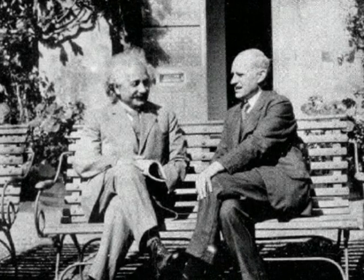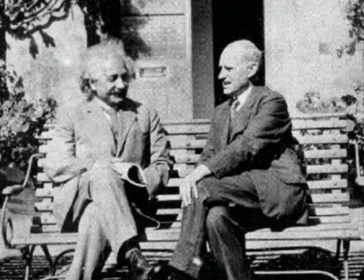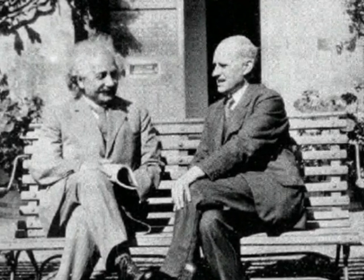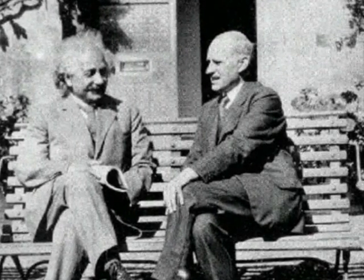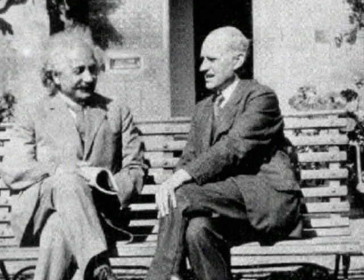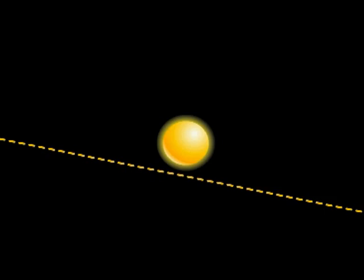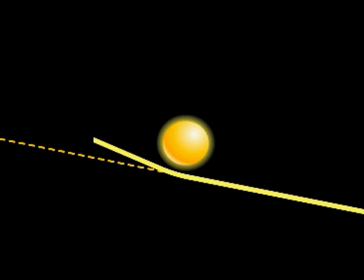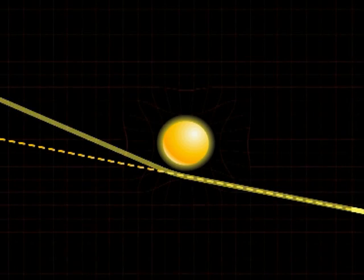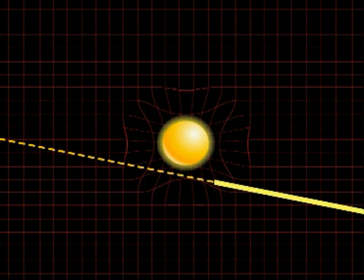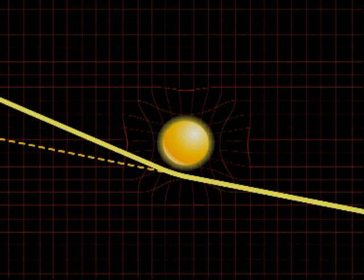Gravitational perturbations travel at exactly the same speed as light — the Newton conflict was resolved. In 1919, the British physicist Arthur Eddington carried out an experiment to prove it. During a solar eclipse, he observed that light from one star deviated as it passed close to the gravitational field of another.